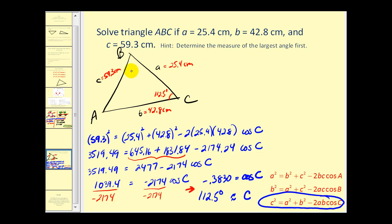Now to find a second angle in this triangle, we'll use the law of sines. We'll use angle C and side C to start. Sine of 112.5 degrees divided by 59.3 must equal the sine of B divided by 42.8.